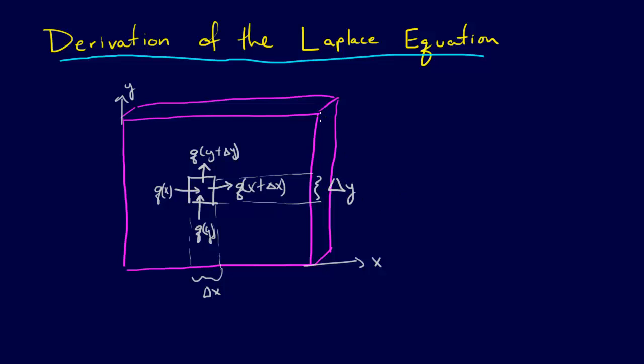And then we can also define the thickness of the plate as this distance here. That's going to be delta z. And then a change in time, we're just going to call that delta t.